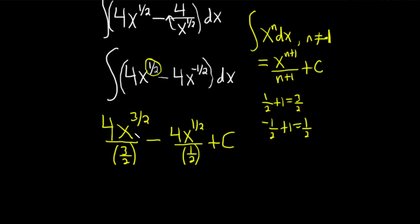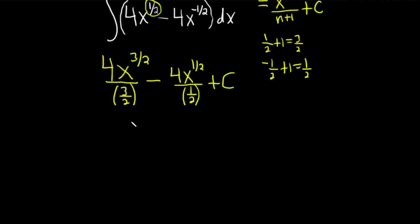And we're still not done because we have a fraction in the denominator. Typically not something we do. So basically you have this and you're dividing it by a fraction. Remember division is the same thing as multiplication by the reciprocal. So this is really two-thirds four x the three-halves. Right? Because you're dividing by three-halves. It's the same thing as multiplying by two-thirds. Minus two over one. And then four x to the one-half. And then we have plus C. Don't forget the plus C, our constant of integration.